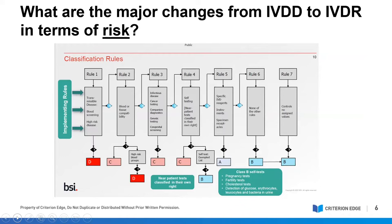One of the biggest changes is the replacement of a list-based classification system with a more clear set of classification rules, which assigns each device to one of four risk categories ranging from lowest risk — Class A — to higher risk — Class D. Under IVDD, notified body oversight was only required if your products were expressly listed in Annex 2, which represented about 20% of all IVDs. The vast majority of IVD devices could actually self-certify without a need for notified body involvement up until now.